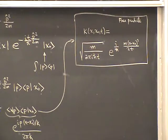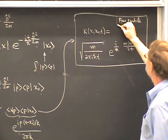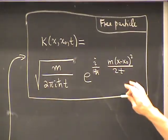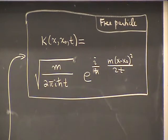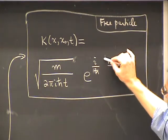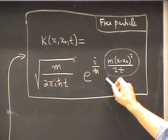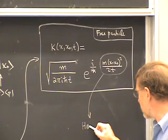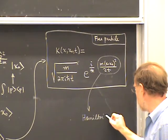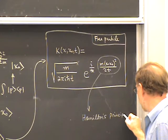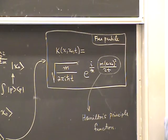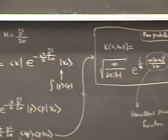This is the main result for the propagator of the free particle. There aren't very many systems for which one can calculate the propagator explicitly, but the free particle is one of them and it appears quite often in practice. Note that the quantity appearing in the exponent — multiplied by iℏ — is called Hamilton's principal function, which plays an important role in classical mechanics, and it's interesting that it appears here in this quantum problem of propagating wave functions.